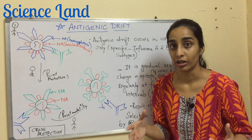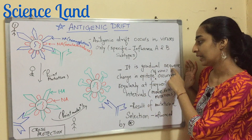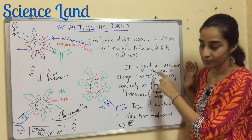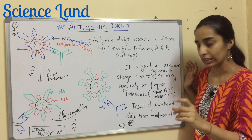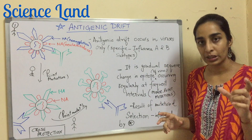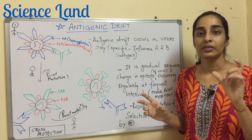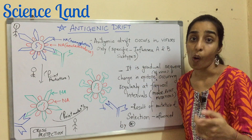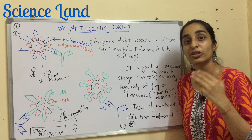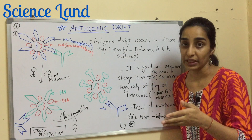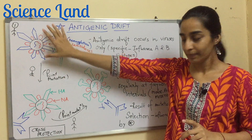This is the meaning of antigenic drift. The definition: it is a gradual sequence change in the epitope of the virus, occurring regularly at frequent intervals. It is essentially an accumulation of minor changes — mostly point mutations in sequences related to the epitope. This occurs often and leads to epidemics, not pandemics.